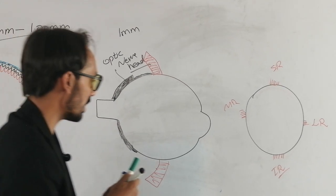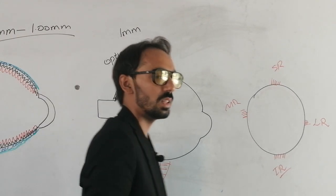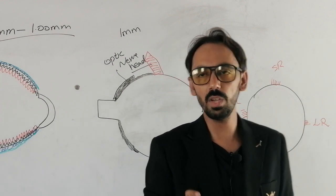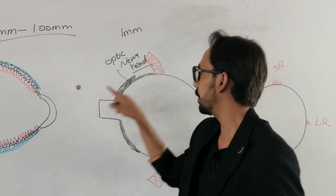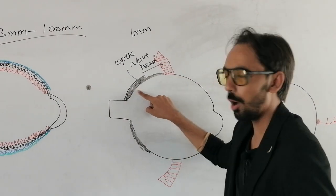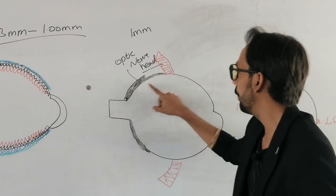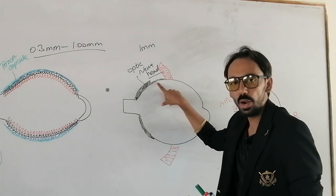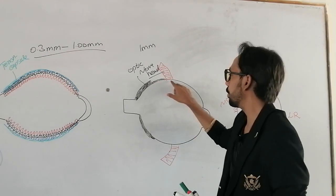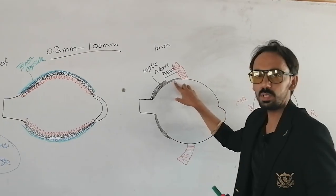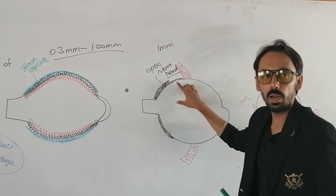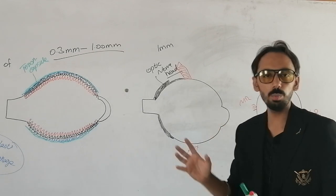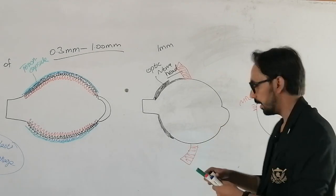Now we will discuss about the weakest point of the sclera. We have discussed the thickest point at the optic nerve head, and we have discussed the thinnest point posterior to the recti muscles insertion. And now we will discuss about the weakest point of the sclera.